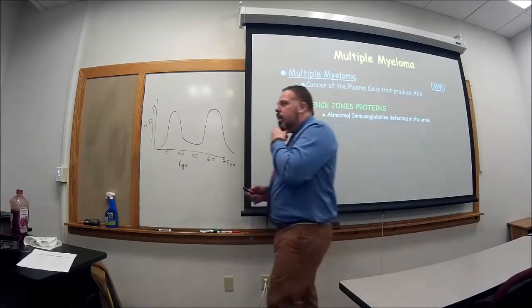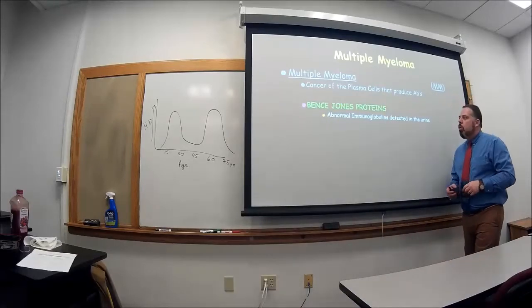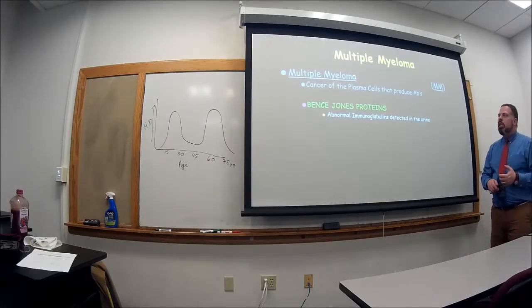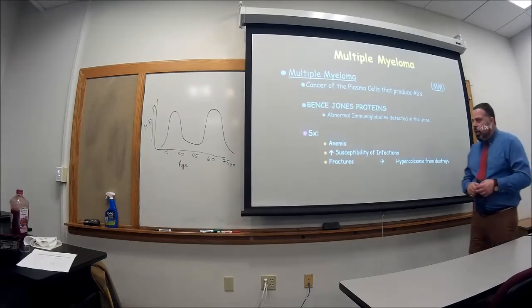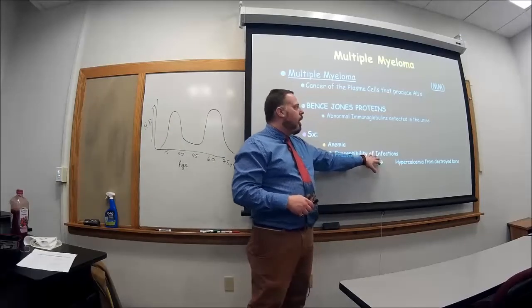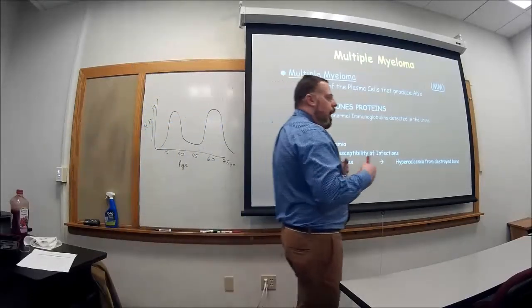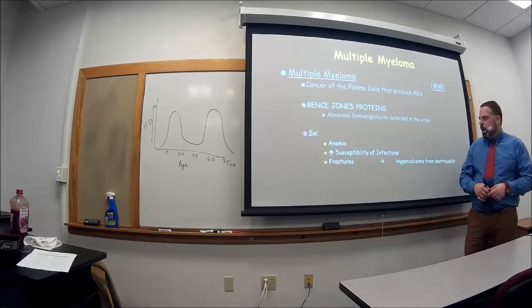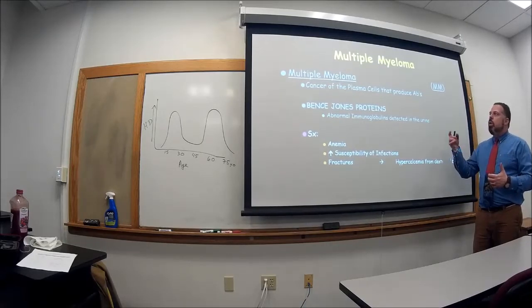Now one of the classic things that we do see that happens in the urine is that they have what we call Bence-Jones proteins. They're abnormal immunoglobulins, antibodies that are detected in the urine. And that's what happens. When you see these Bence-Jones proteins in the urine, you could almost classically understand that it's multiple myeloma. The symptom is that they get anemic. They're very tired. They're more susceptible of getting infections because of the plasma cells not producing the antibodies to help fight the infection. And they also get many fractures.